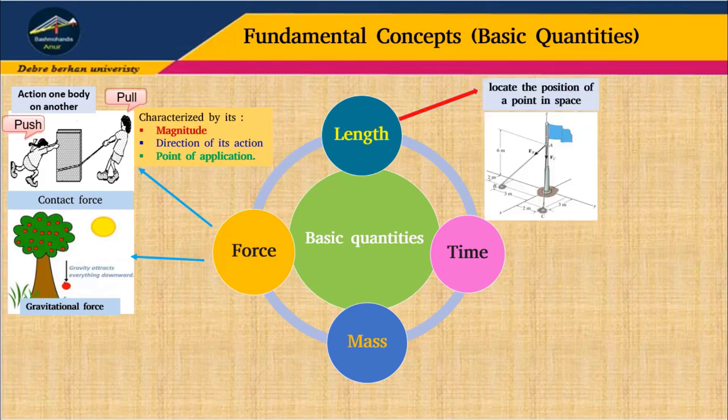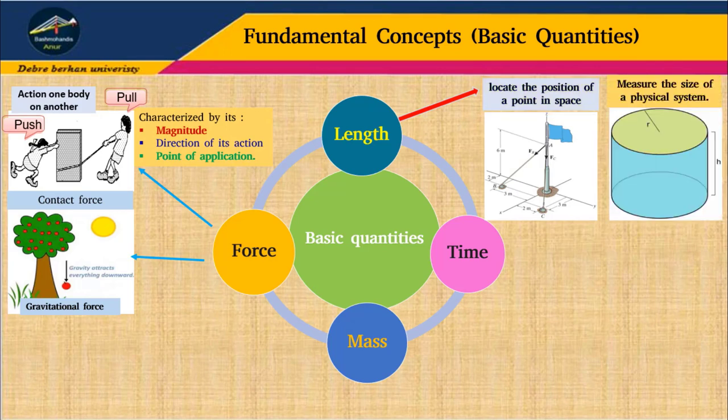The second basic quantity is length. Length is used to locate the position of a point in space. Or it can be used to describe the size of a physical system.